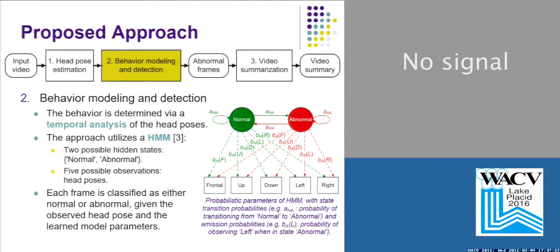The second step is to do behavior modeling, and we achieved this with a hidden Markov model. The hidden Markov model has two hidden states, normal and abnormal, and the observations are the five head poses.